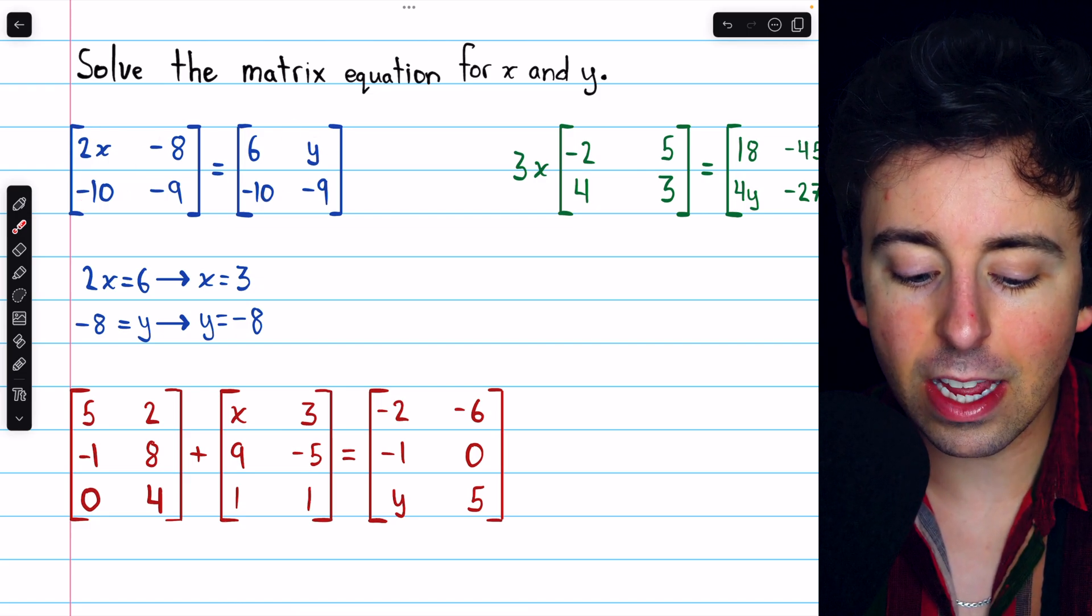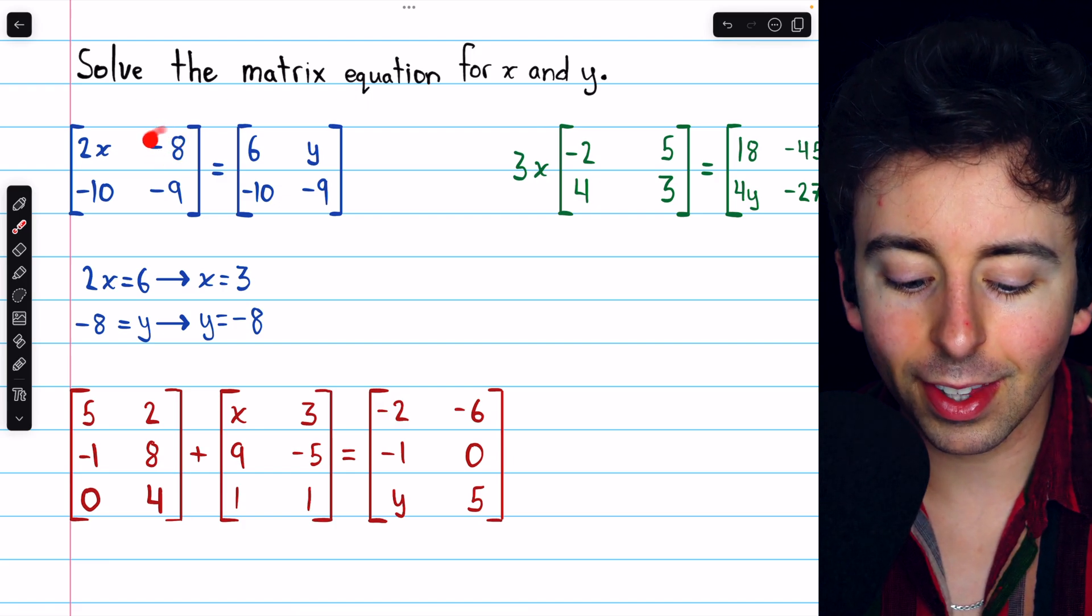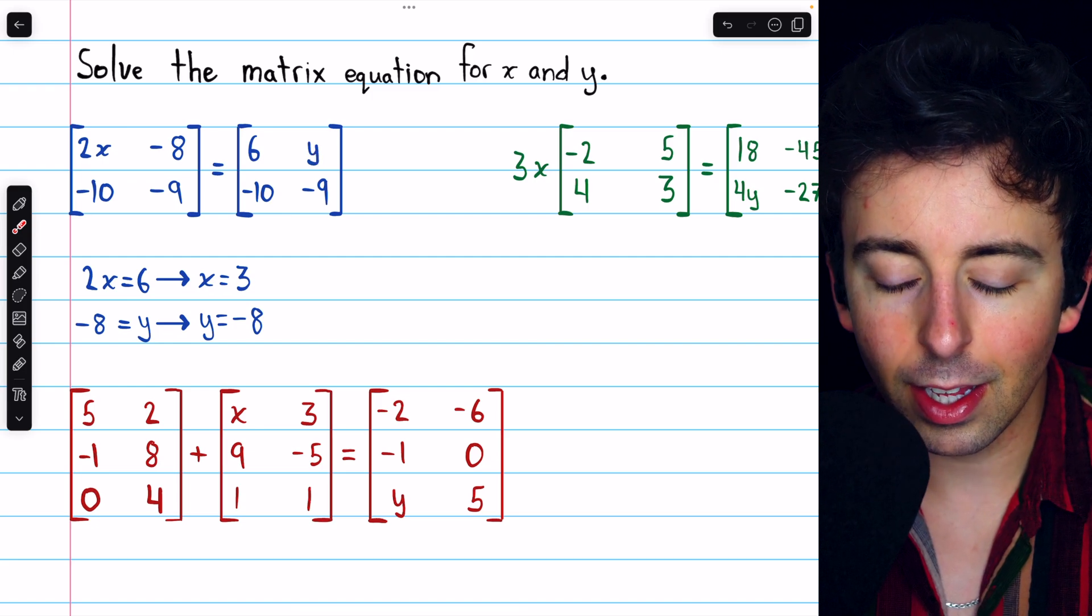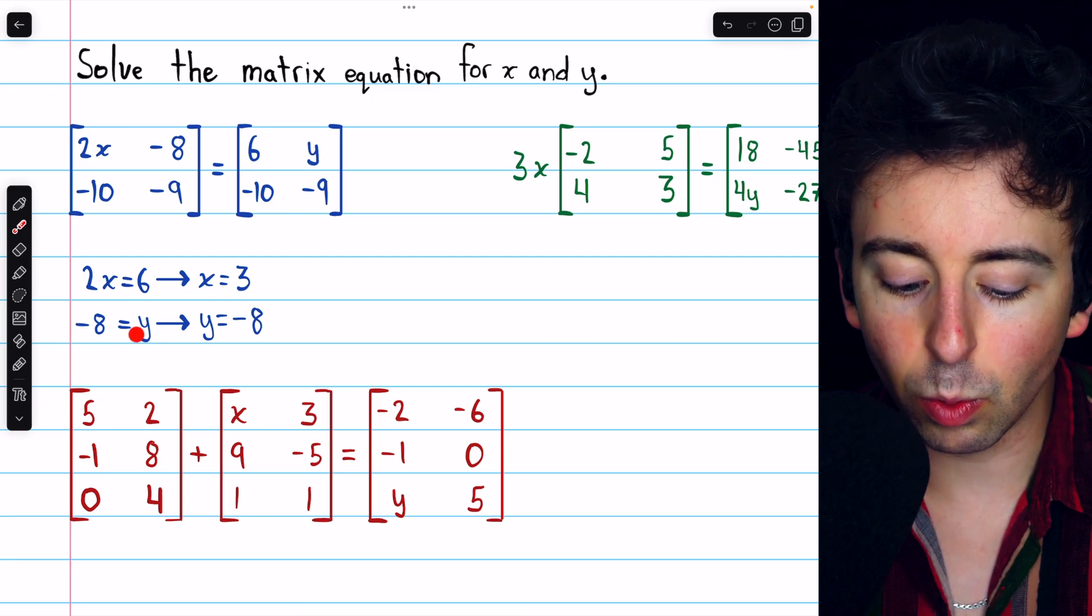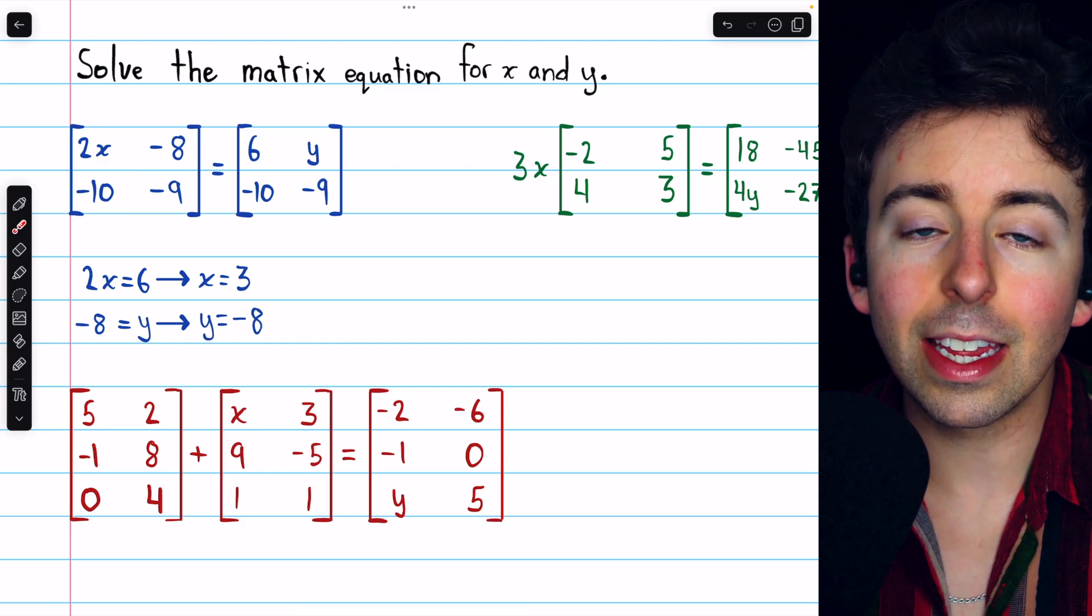And again, for these two matrices to be equal, the entry in row 1 column 2 of the matrix on the left must equal the corresponding entry of the matrix on the right. That means negative 8 must equal y. And so, of course, we may prefer to write it like this, y equals negative 8.